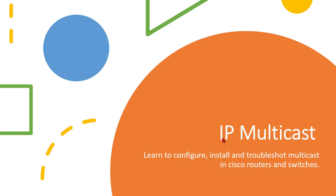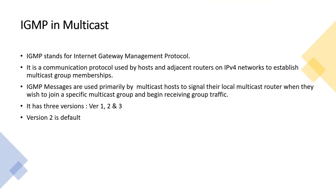In this video I will talk about IGMP, that is Internet Group Management Protocol. Whenever a host wants to join a multicast group it sends messages on the group address which ultimately go to the multicast-enabled router. IGMP works in that communication — it is a communication protocol used by hosts and adjacent routers on the IPv4 network to establish multicast group membership. The purpose is that the host wants to receive traffic, and that is why these messages are used.